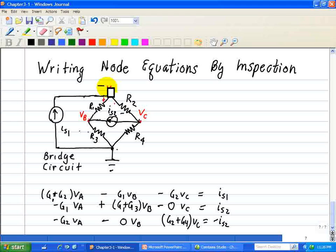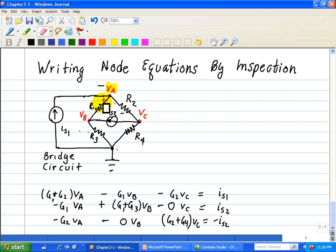So we look at node A, VA, and we see what's connected. We see it's resistor R1, resistor R2. So what we do is then we go G1 plus G2, which is the conductance or the reciprocal of each of these resistors. So we have G1 plus G2 times VA.